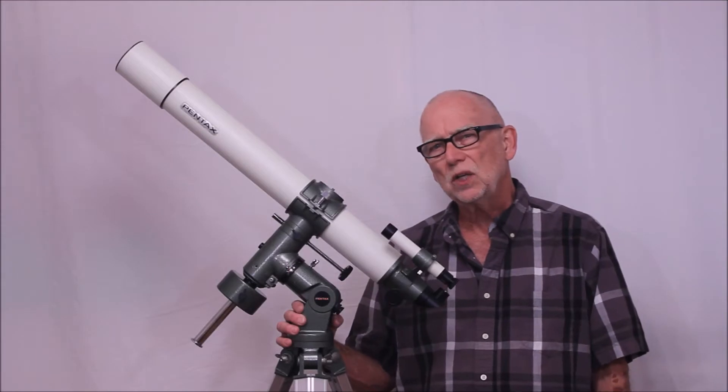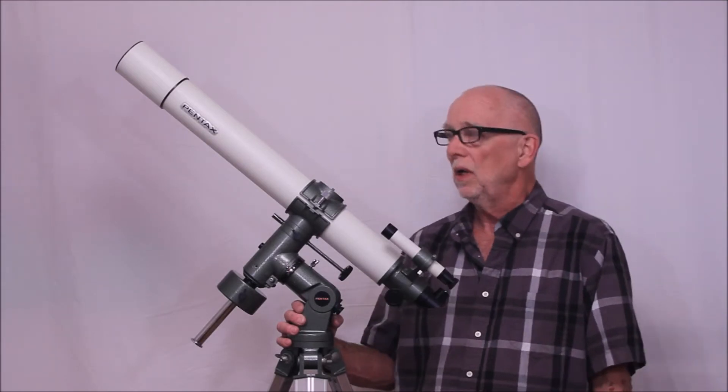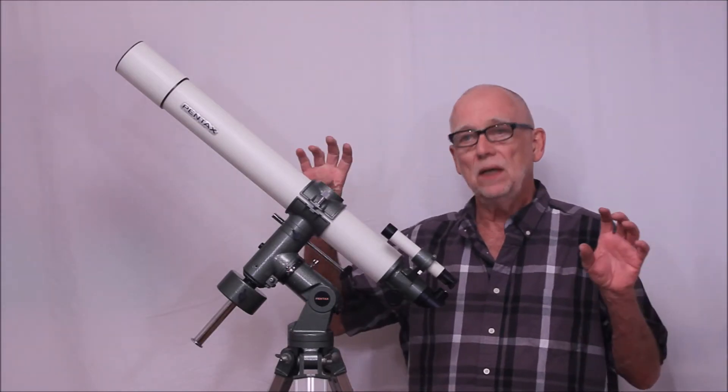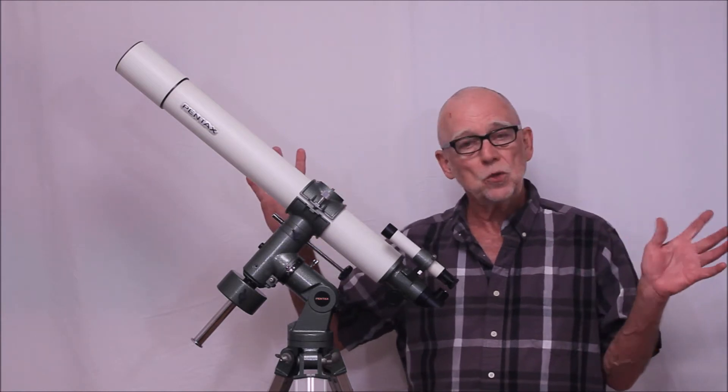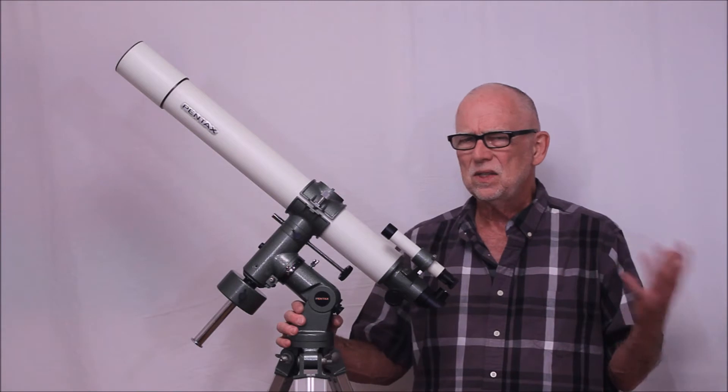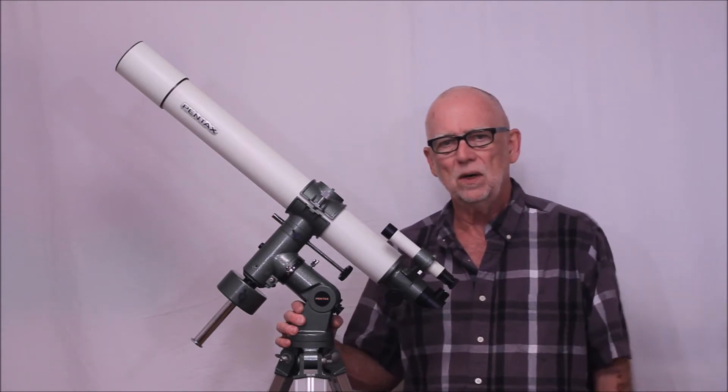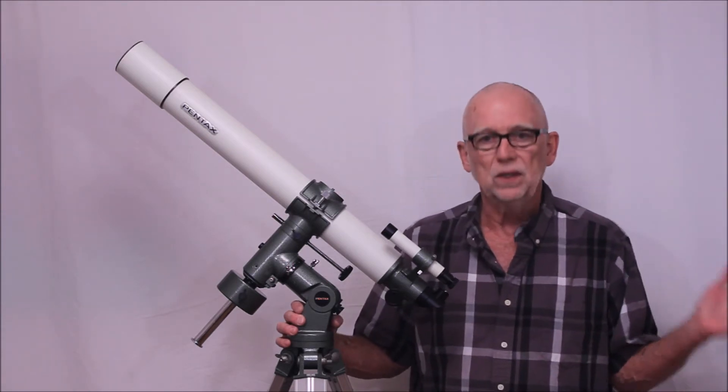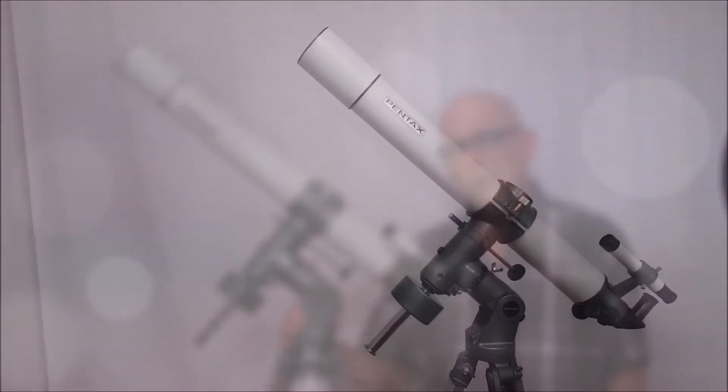And that focal ratio is actually one of the advantages of the scope. It makes the scope very compact, has pretty decent aperture, and yet it is easy to manage. And a 65mm at f11 is really good. Very, very little problem with chromatic aberration.